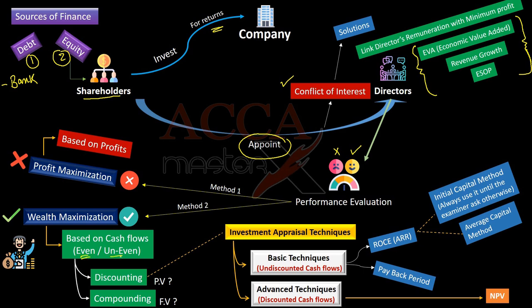These cash flows can be even or uneven. By even, we mean the expected cash flow will remain the same and constant for the next number of years, while by uneven we mean these cash flows can be different from year to year. The wealth maximization concept will be useless without discounting these cash flows — by discounting we mean we want to take the present value of our future cash flows. On the other hand, compounding is totally different: we know our present value but we want to predict its future value.